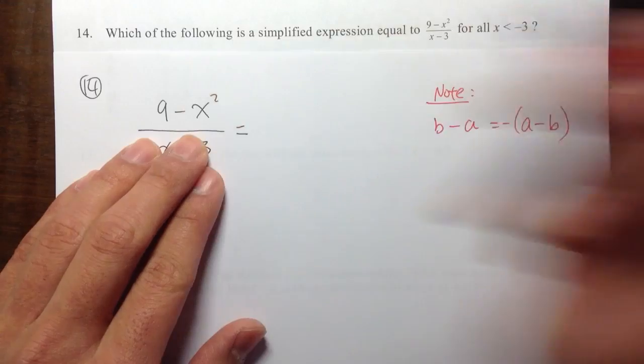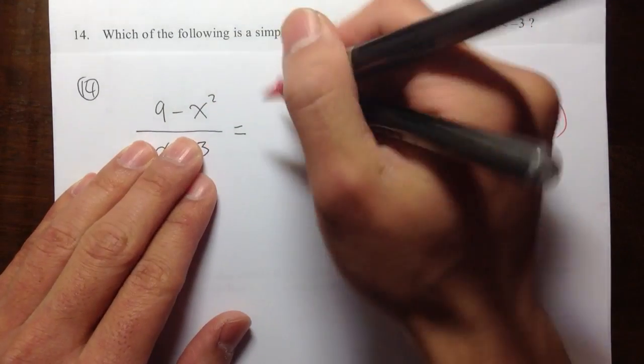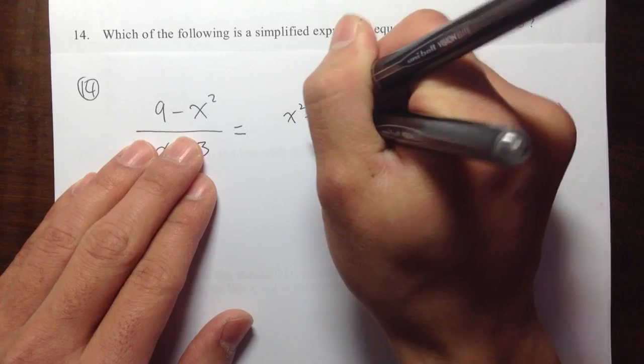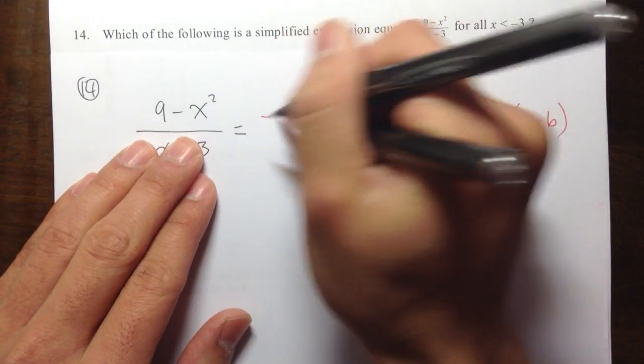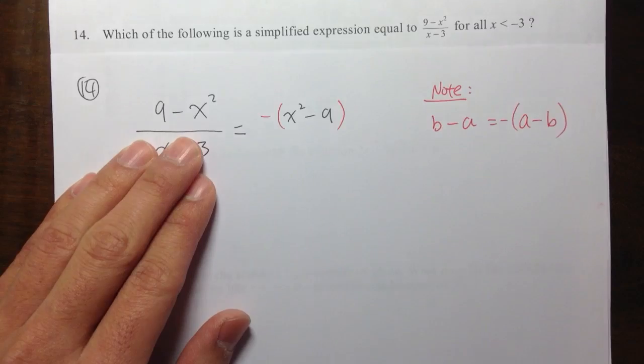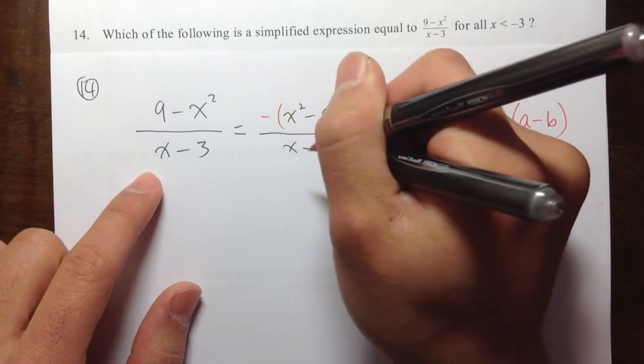On the top, I can see that 9 minus x squared, I don't like that. I want to have x squared minus 9. That's totally okay, but you need to make sure that the result is negative. So that's my first step.